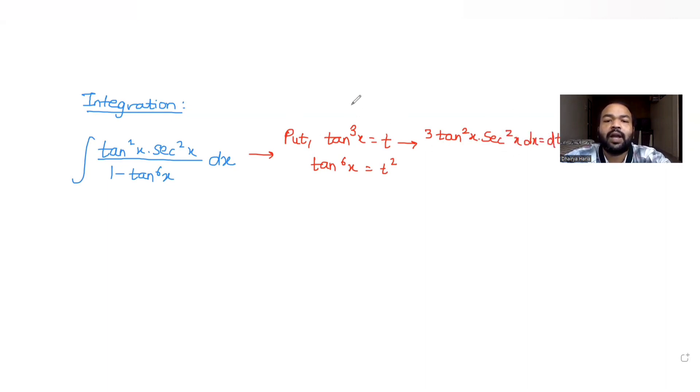Here I can write my numerator, which is tan²x sec²x dx. From here I understand tan²x sec²x dx equals dt by 3.